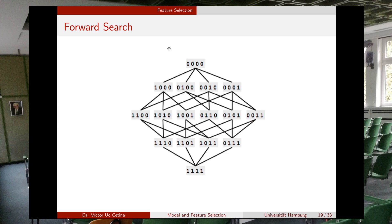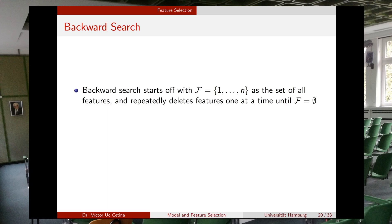Backward search works exactly the same but in the opposite direction. You start with every feature in your subset and try different versions by deleting one feature at a time, keeping deleting until performance stops improving. Backward search starts with F containing all features, then repeatedly deletes features one at a time until reaching the empty set — though you stop before deleting all features.